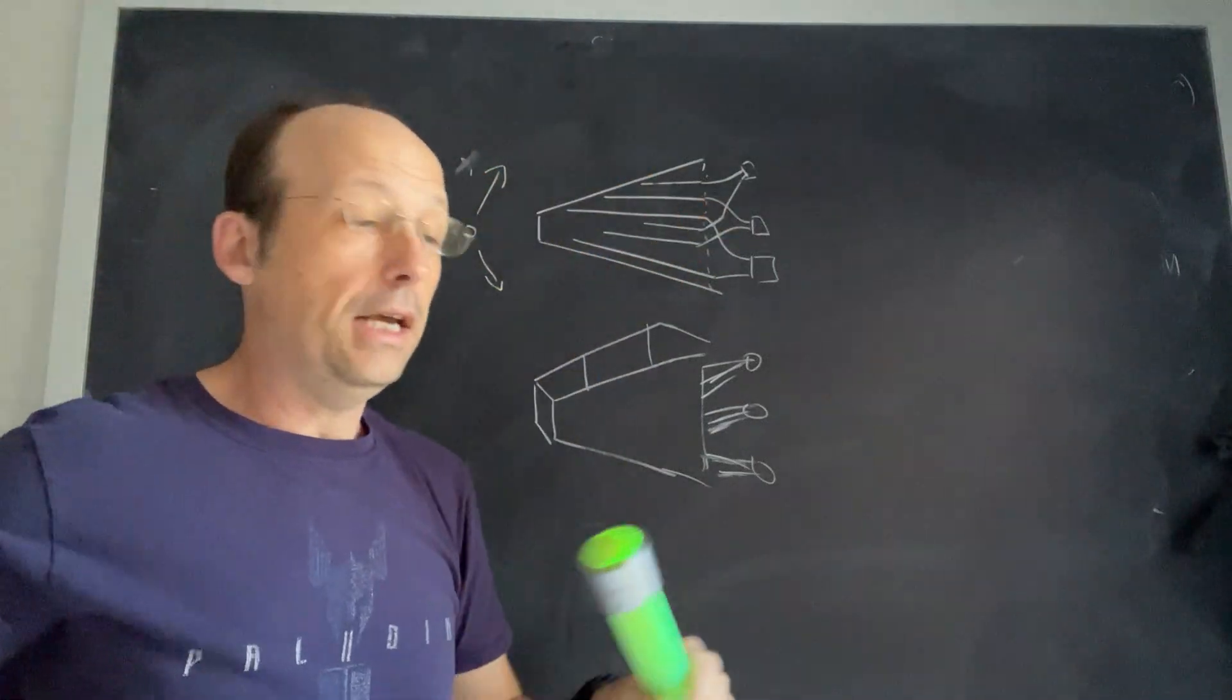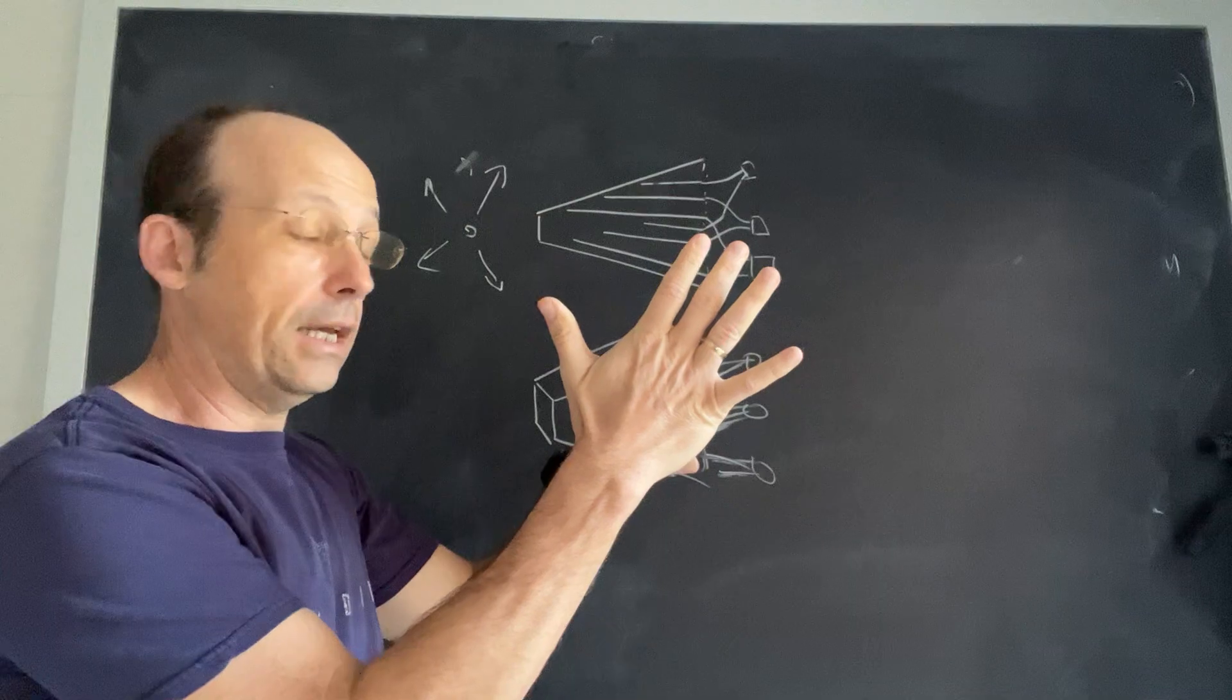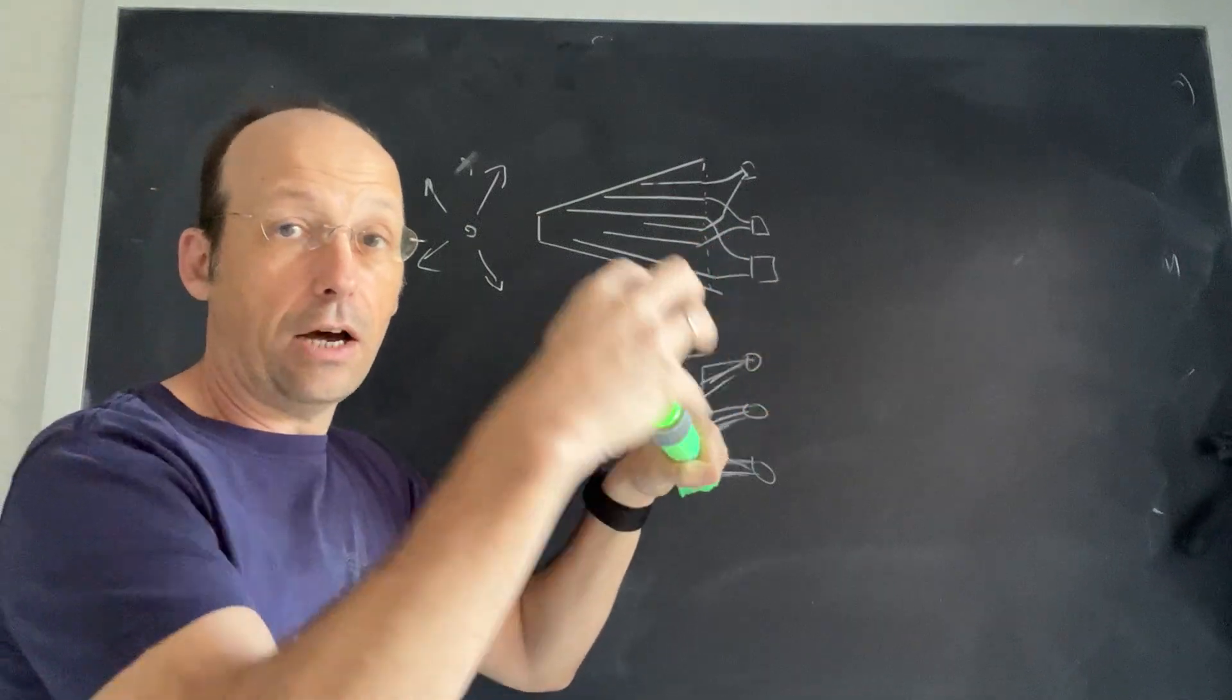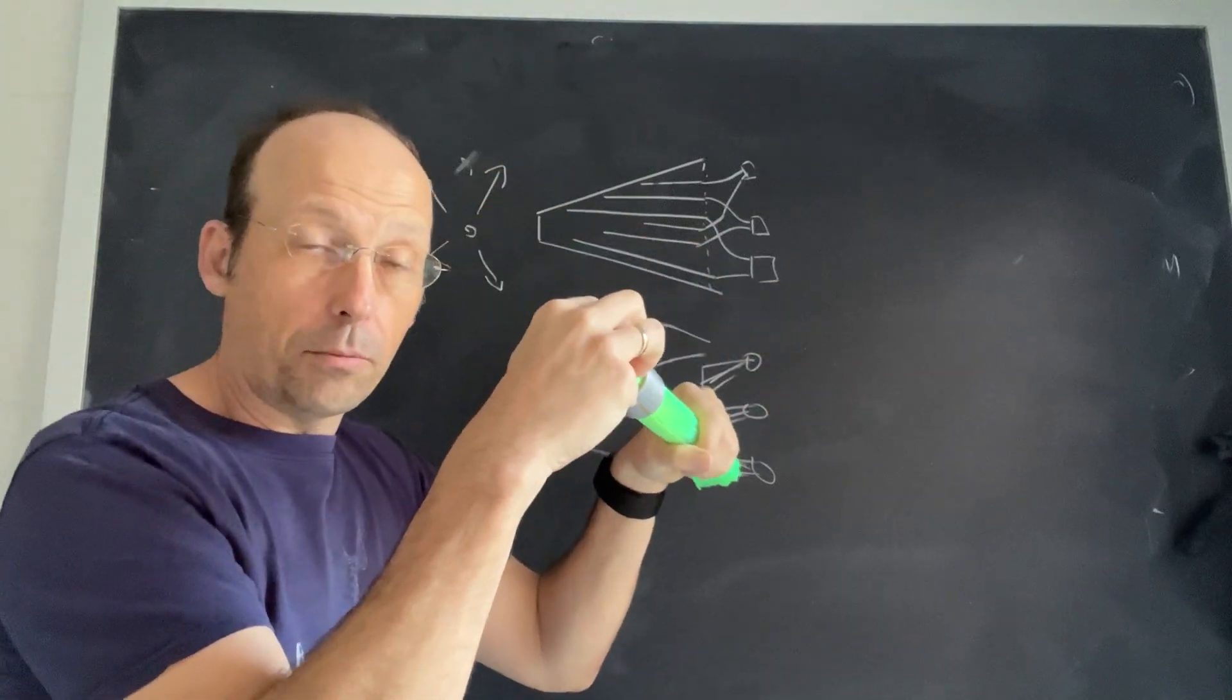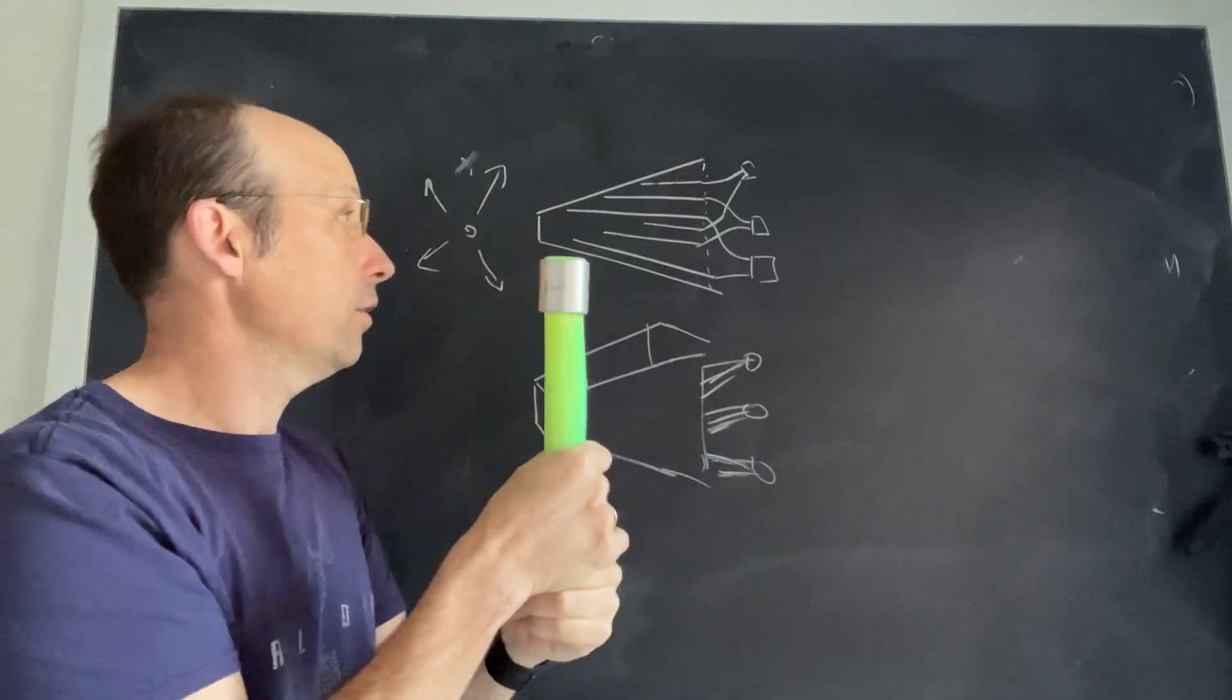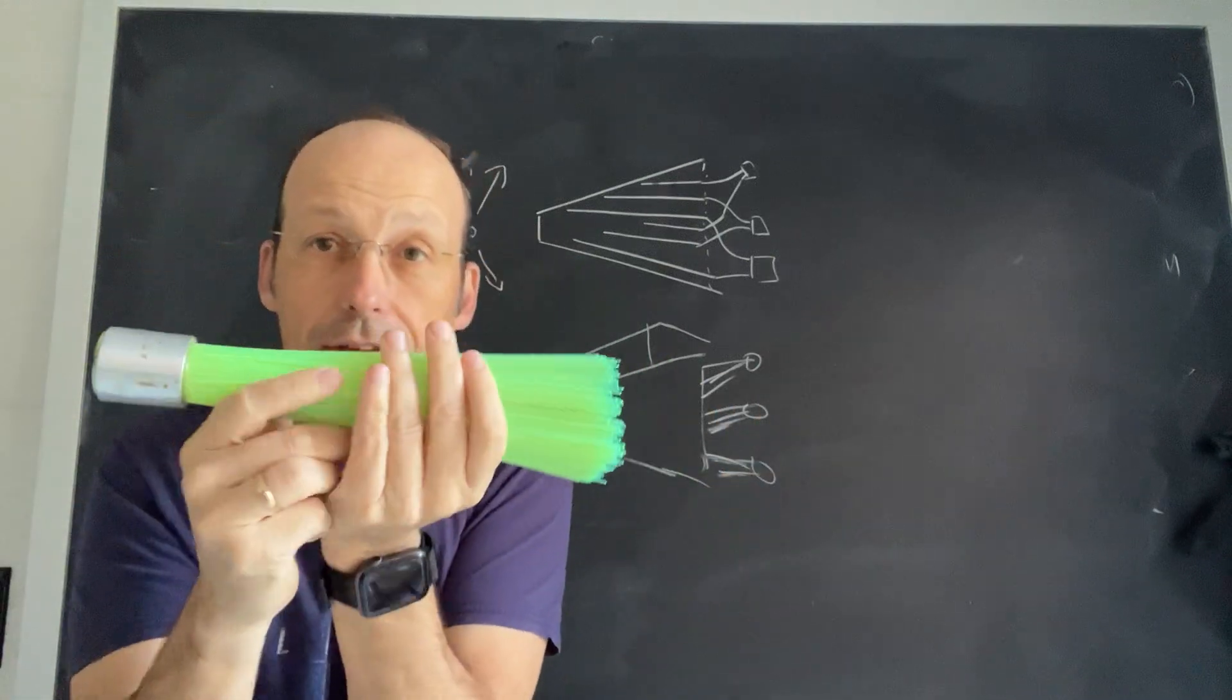These were all connected together, polished down, photomultiplier tube hooked onto the end, and then you could do that. So why do I have this if it should be in Fermilab?